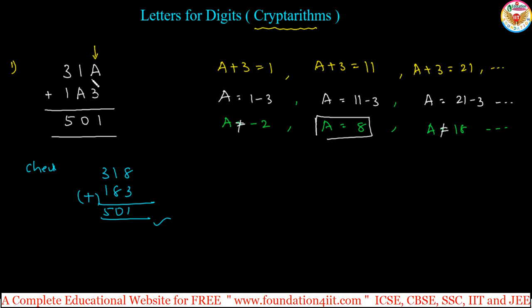A is equal to 8 satisfies the addition in tens and hundreds columns. Both places, tens and hundreds column satisfies this both. We can take this. This is the pattern if you frame, then you can identify the value easily.